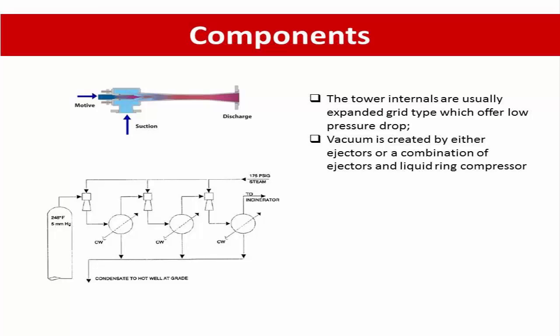around 100 to 120 mmHg at the bottom. The system to create a vacuum uses either ejector or the combination of ejector and liquid ring compressor.